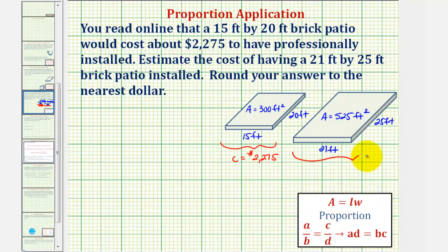And we're trying to estimate this cost and therefore the cost is unknown. To keep things organized, let's call this A sub 1 and A sub 2, and we'll call this C sub 1 and C sub 2.